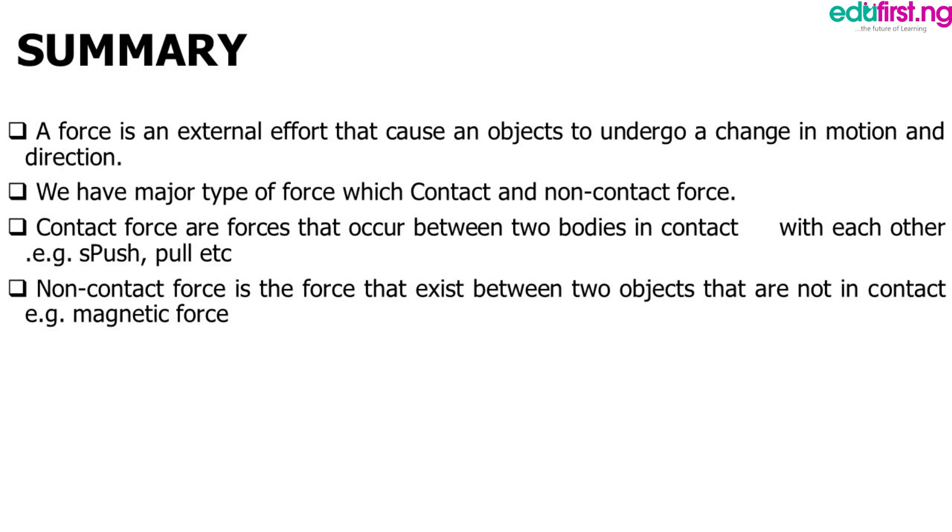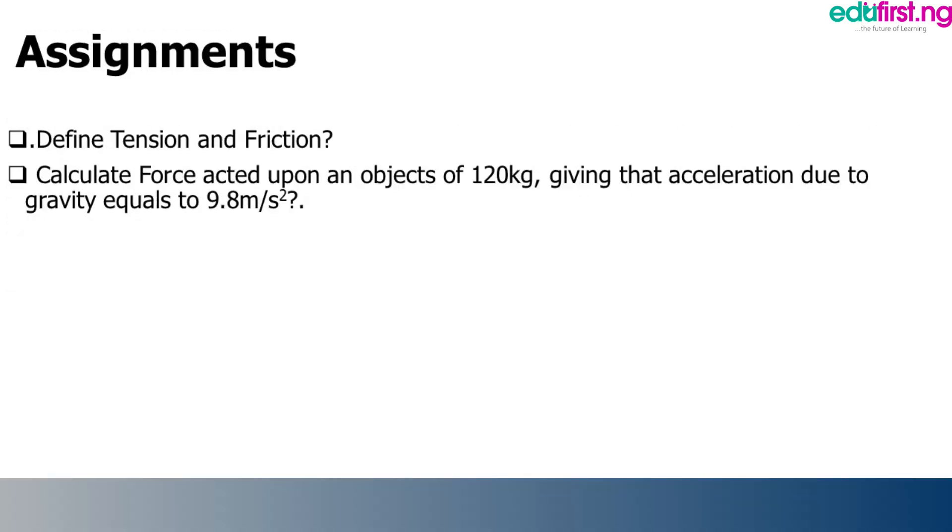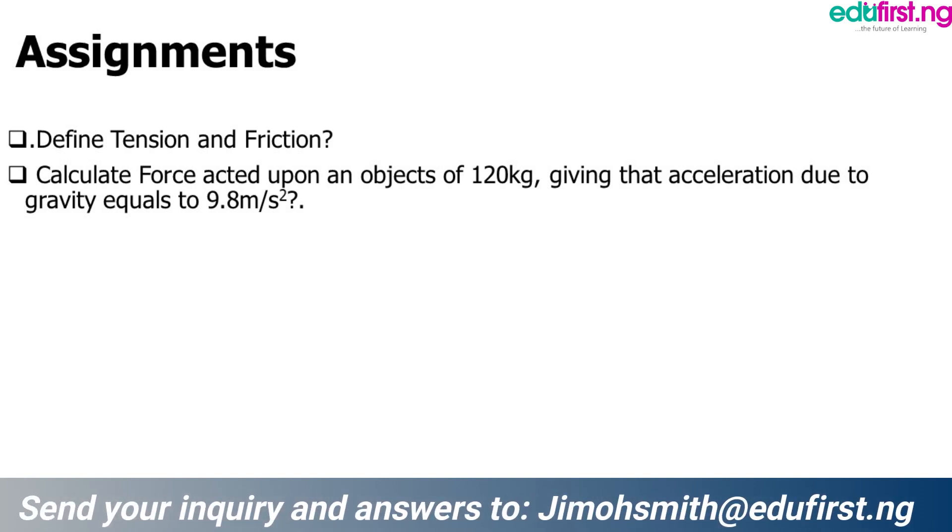Assignment. Define tension and friction. Number two, calculate force acted upon an object of 120 kg given that your acceleration due to gravity is equal to 9.8. See you in the next class.